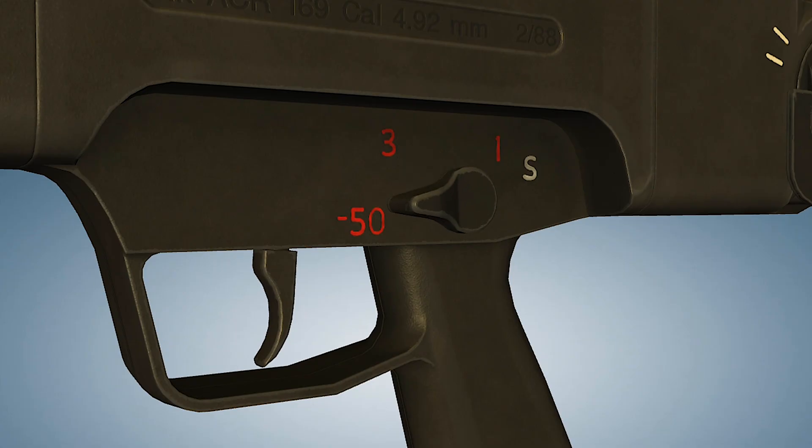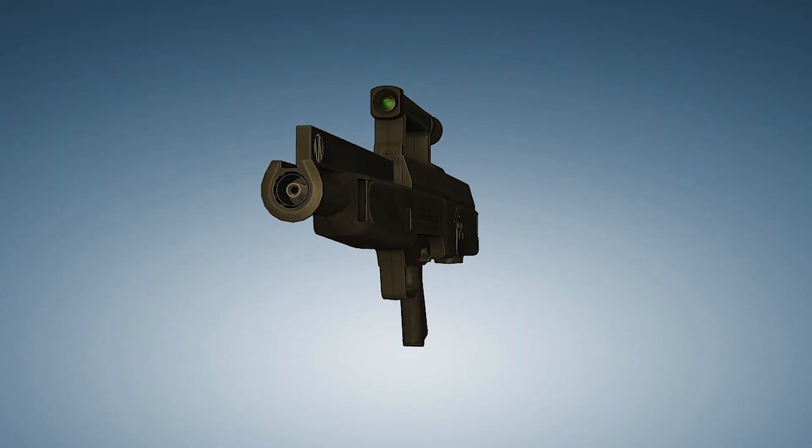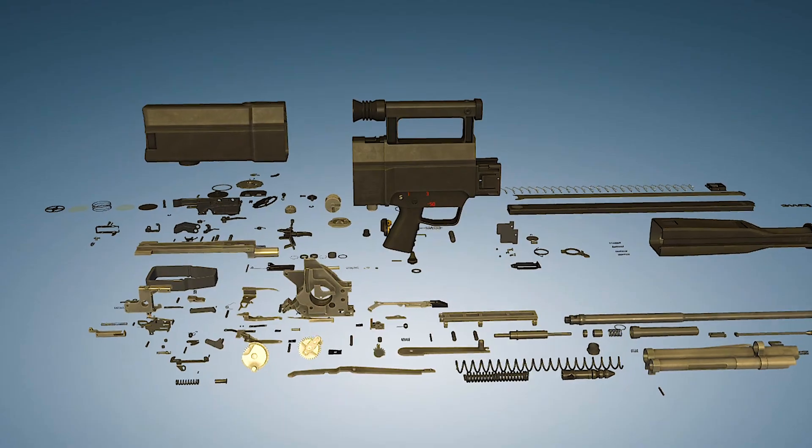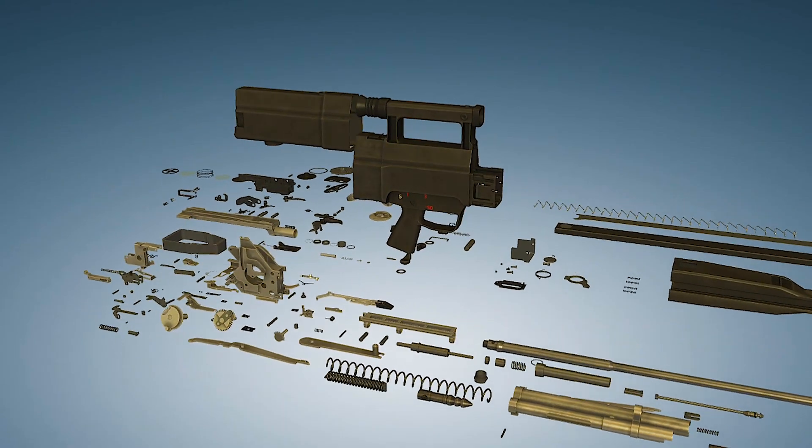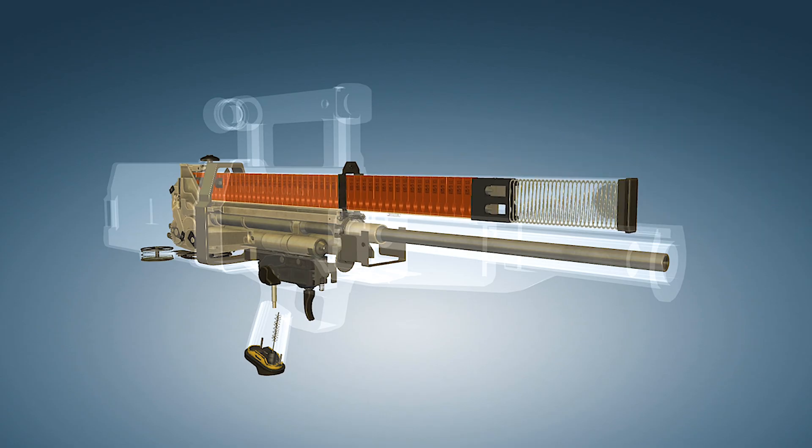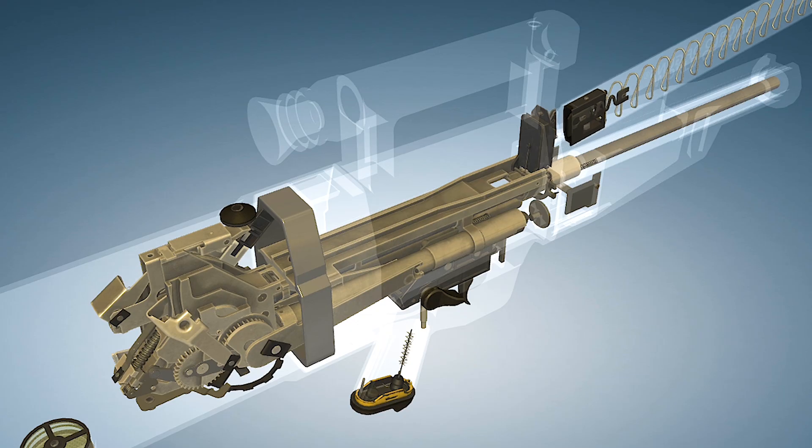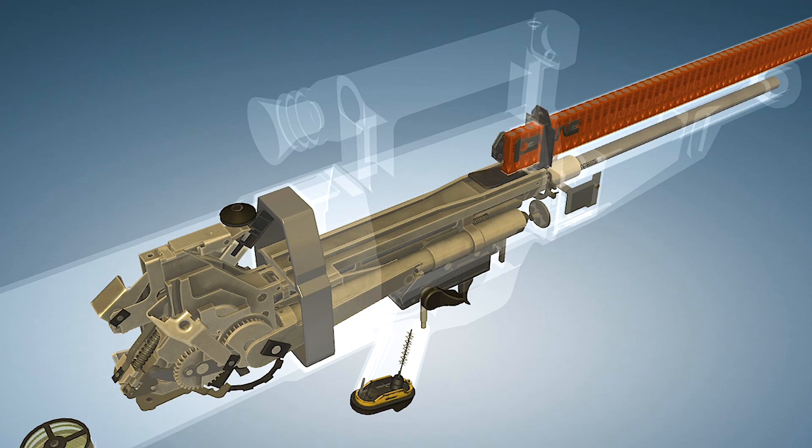In regular full auto mode, it still fires at a respectable 400 rounds per minute. Its design is just as radical. With a bullpup configuration, the magazine sits behind the trigger, making the G-11 surprisingly compact without sacrificing accuracy.